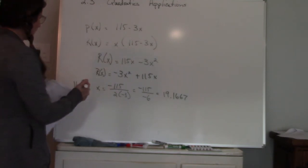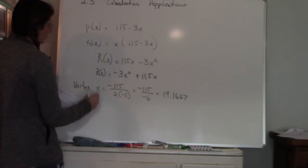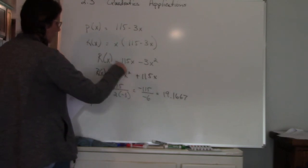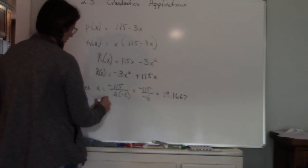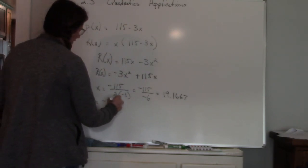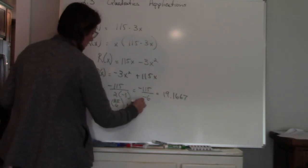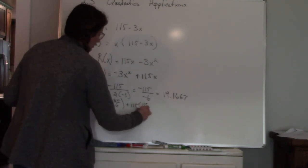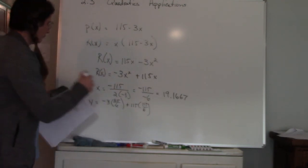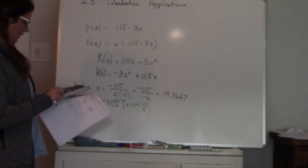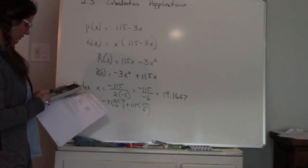Now to get my Y value, remember the Y value is I plug my X value back into my revenue function. So negative 3 times 115 over 6 because that is going to be more accurate. So wherever I see an X I'm going to put in my 115 over 6.